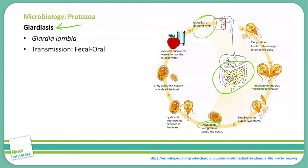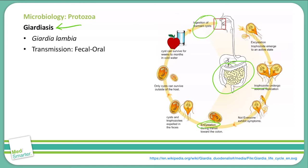The organism is then expelled from the body via the feces. The only way a Giardia lamblia organism can survive outside of the body is in the cyst form. In that cyst form, as you can see here, it can survive for quite a long time in cold water. This is how the fecal-oral route is completed — back into the human body, where it can undergo more replication and transmission.